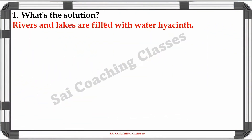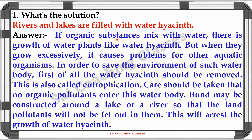Question 1: What's the solution? Rivers and lakes are filled with water hyacinth. Answer: If organic substances are mixed with water, there is growth of water plants like water hyacinth. But when they grow excessively, it causes problems for other aquatic organisms. In order to save the environment of such a water body, the water hyacinth should be removed.